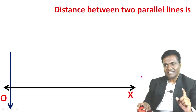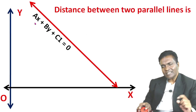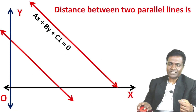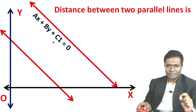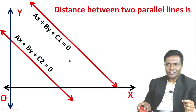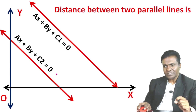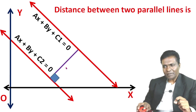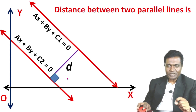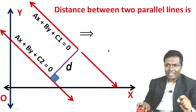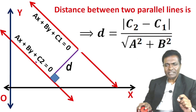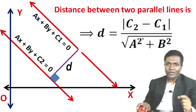This is the distance between two parallel lines. Suppose this is line ax plus by plus c1 equal to zero, and the other equation is ax plus by plus c2 equal to zero. We draw a perpendicular, and the distance d is: d equals mod of (c2 minus c1) divided by root of (a squared plus b squared). This is the distance between two parallel lines — this is the derivation.